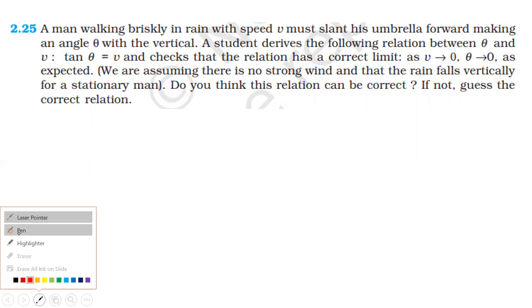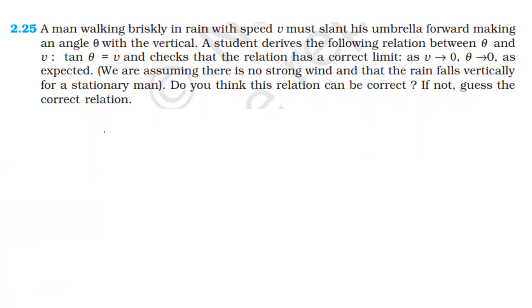If the rain falls vertically downward, the velocity of rain is v' and the velocity of the man is v. The velocity of rain with respect to man is the velocity of rain minus the velocity of man.